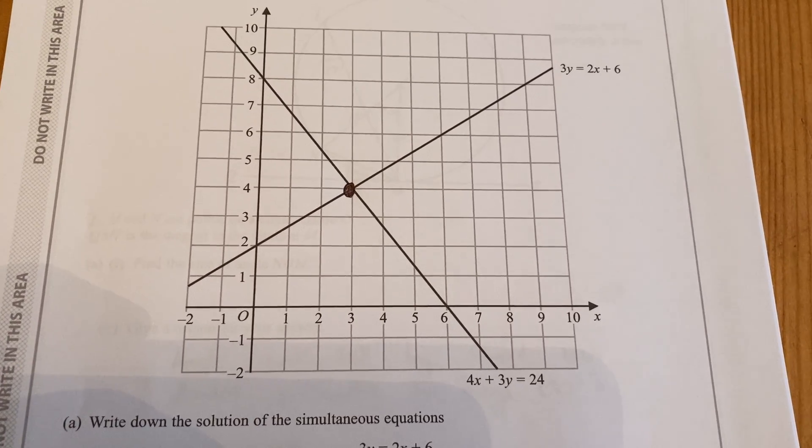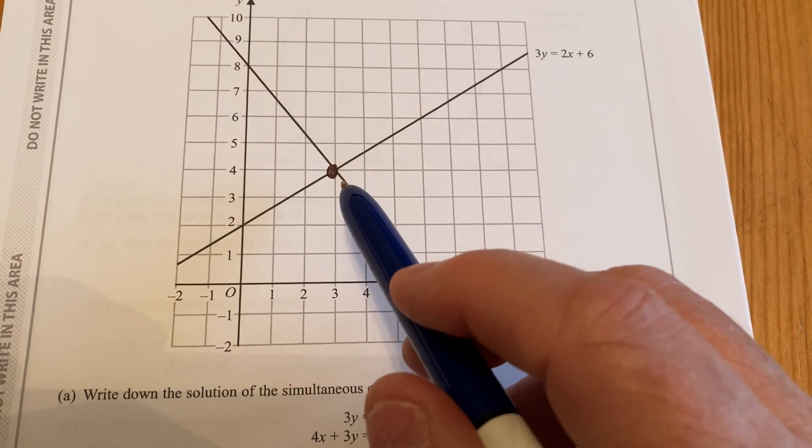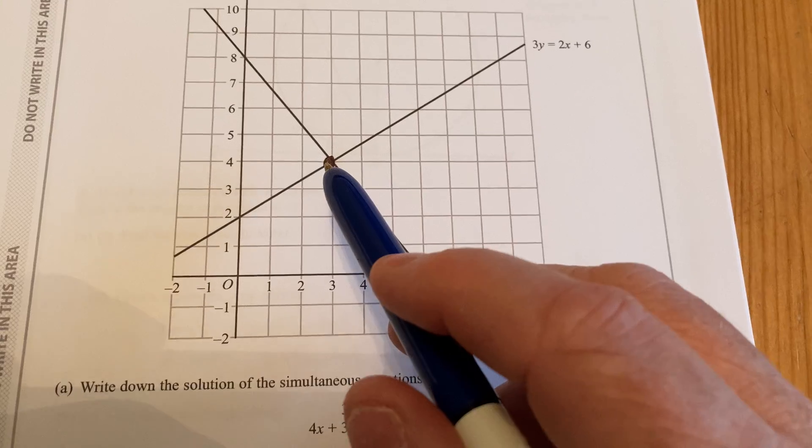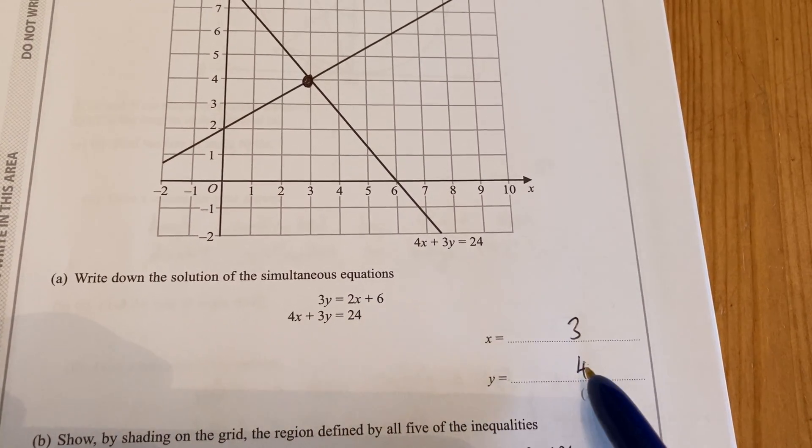The solution to the simultaneous equations is the point where the lines cross, so 3 to the right and 4 up is the intersection point, which would also be the solution to the simultaneous equations: x is 3 and y is 4.